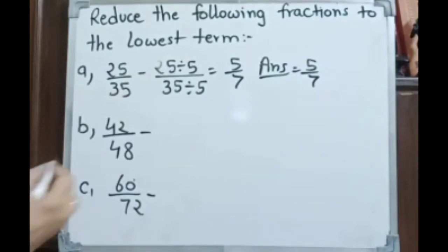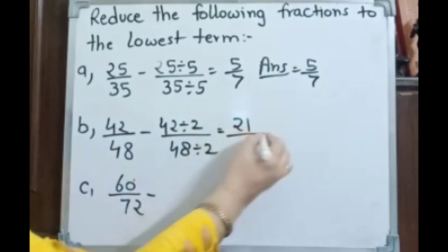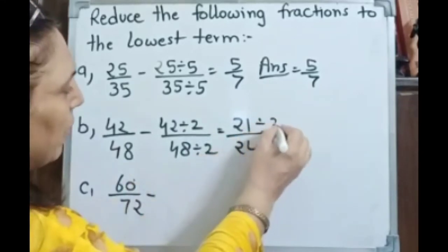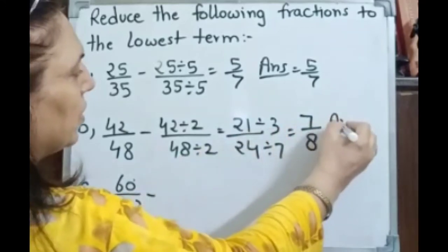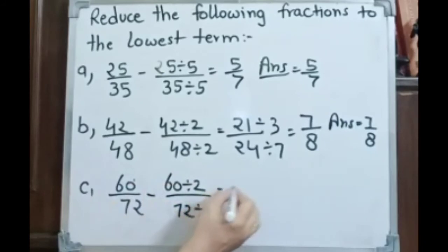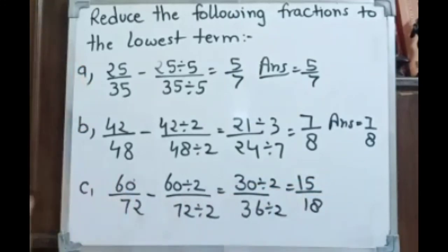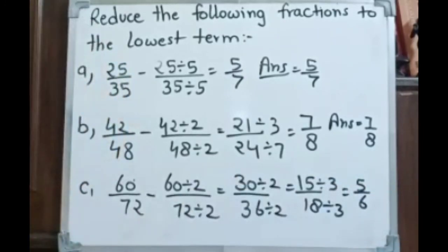For 42 by 48: both are even numbers, so both are divisible by 2, giving 21 by 24. Now both are divisible by 3 — dividing gives 7 by 8. The answer is 7 by 8. For 60 by 72: both are even, divide by 2 giving 30 by 36. Divide by 2 again giving 15 by 18. Now divide by 3 — both divisible by 3 — giving 5 by 6. The answer is 5 by 6.